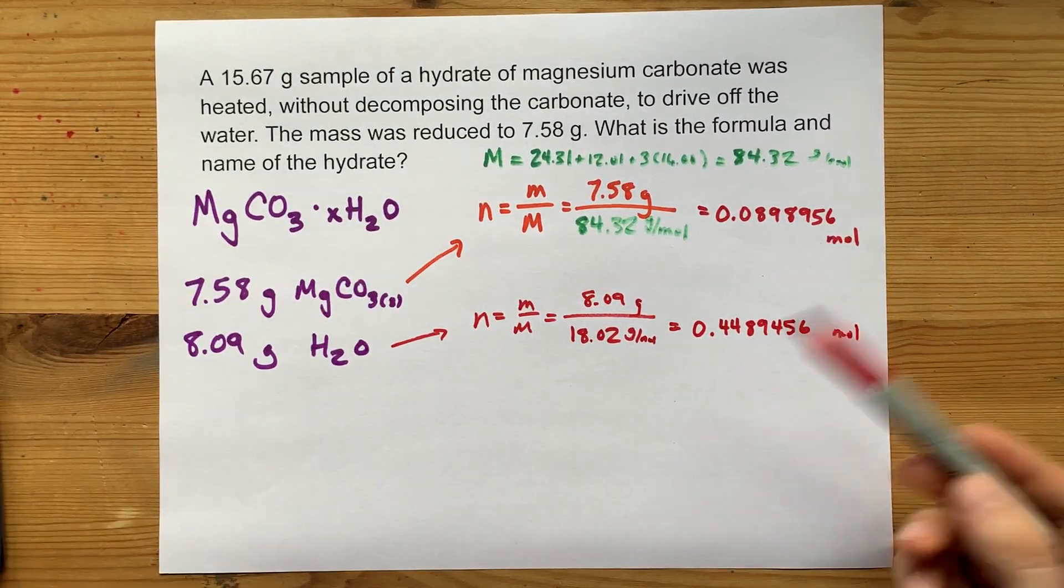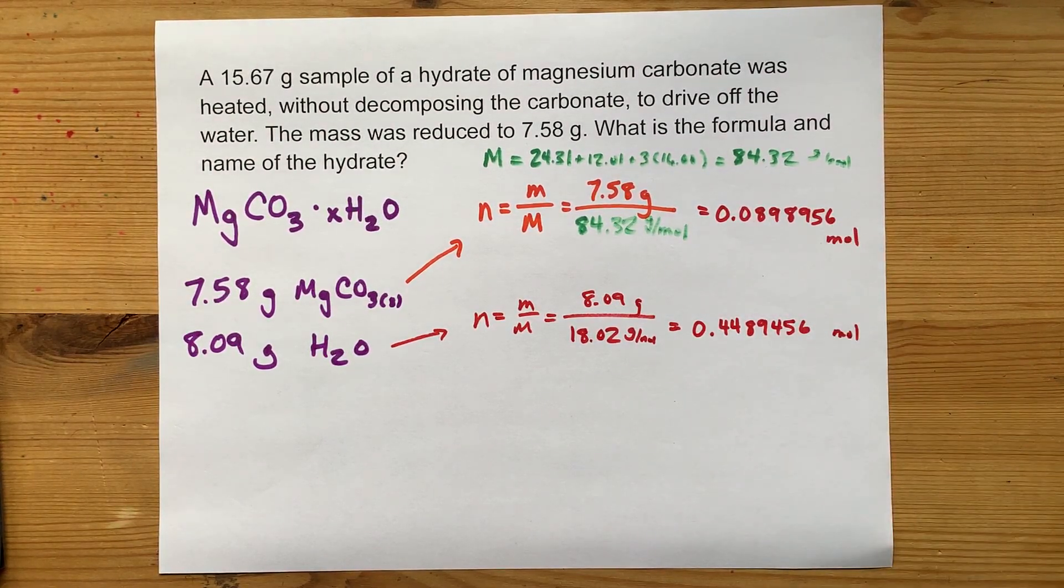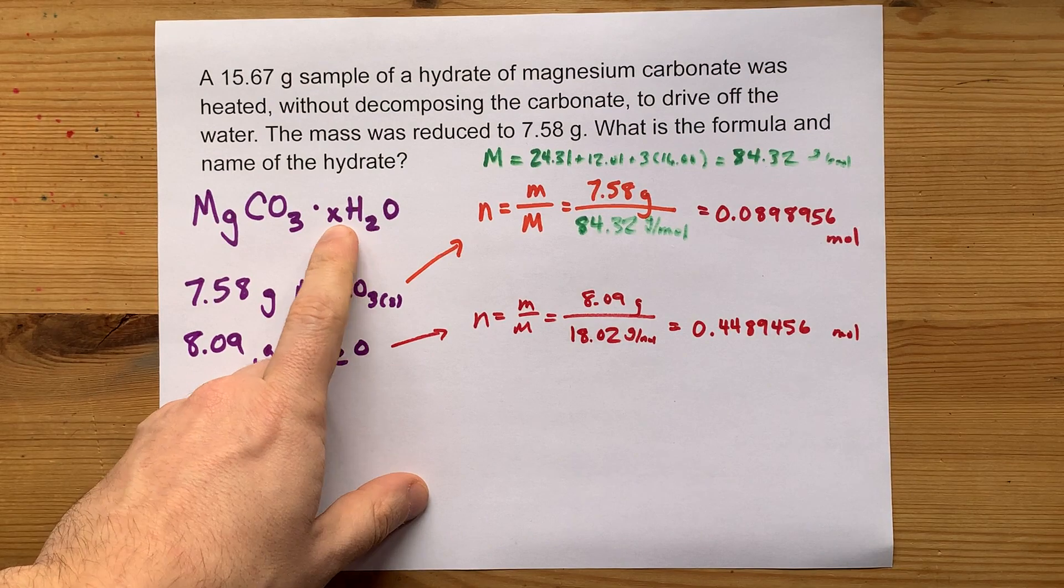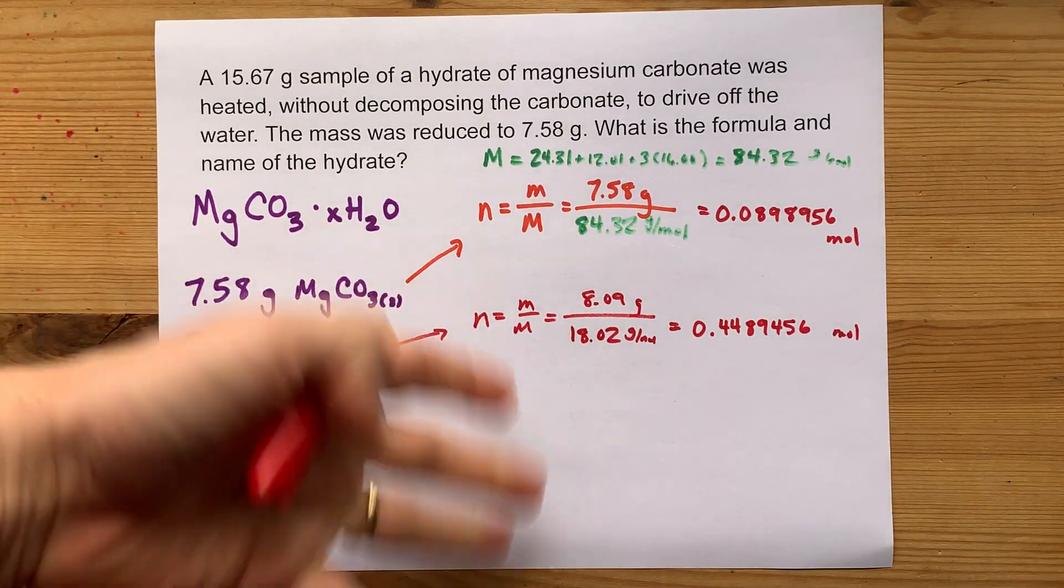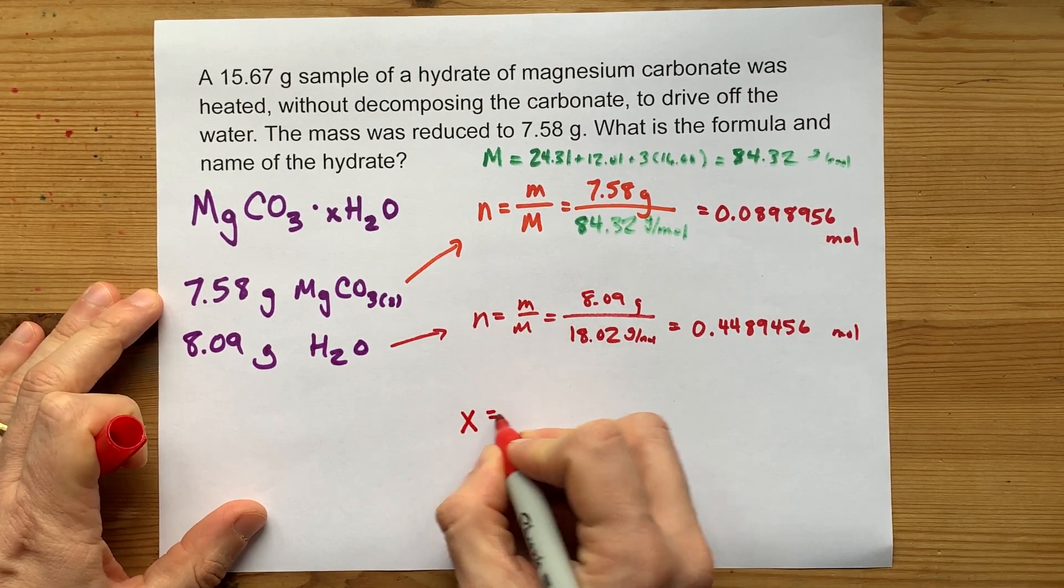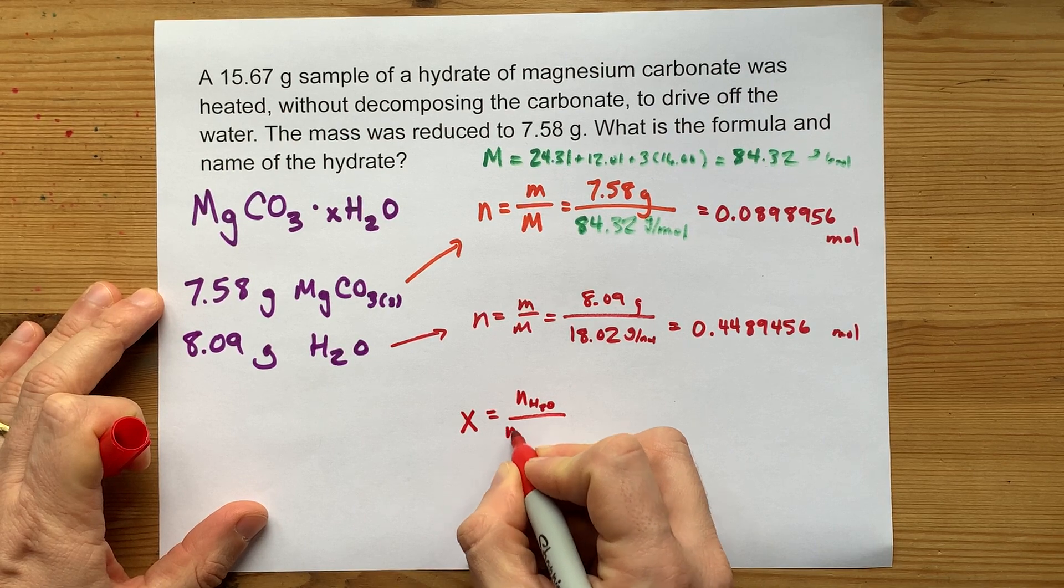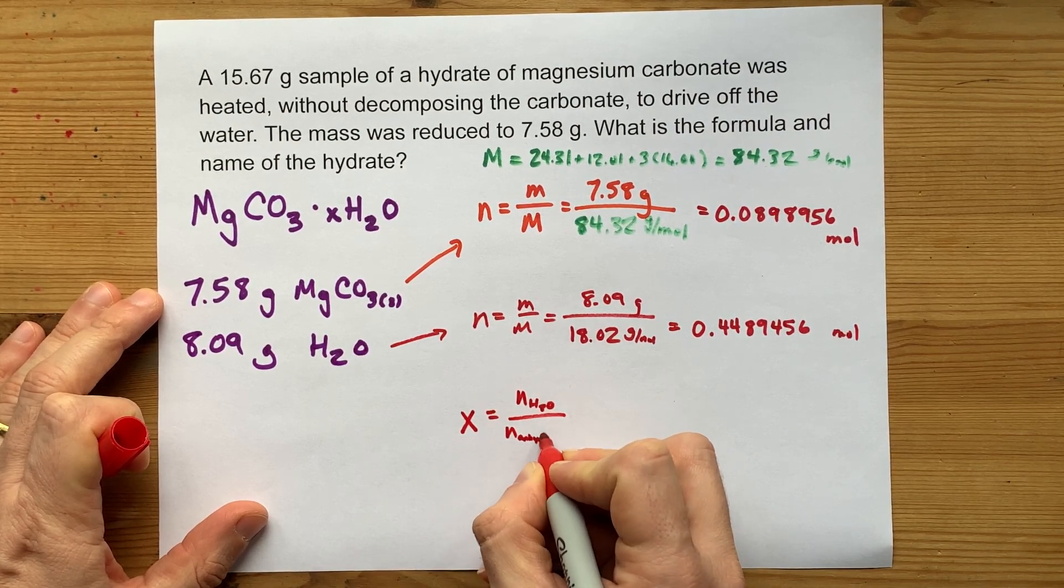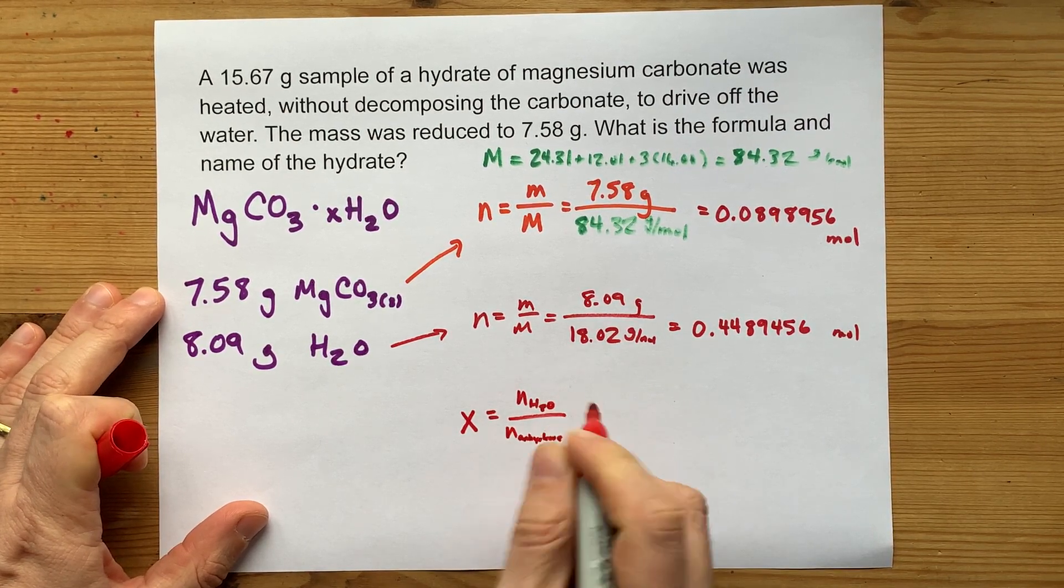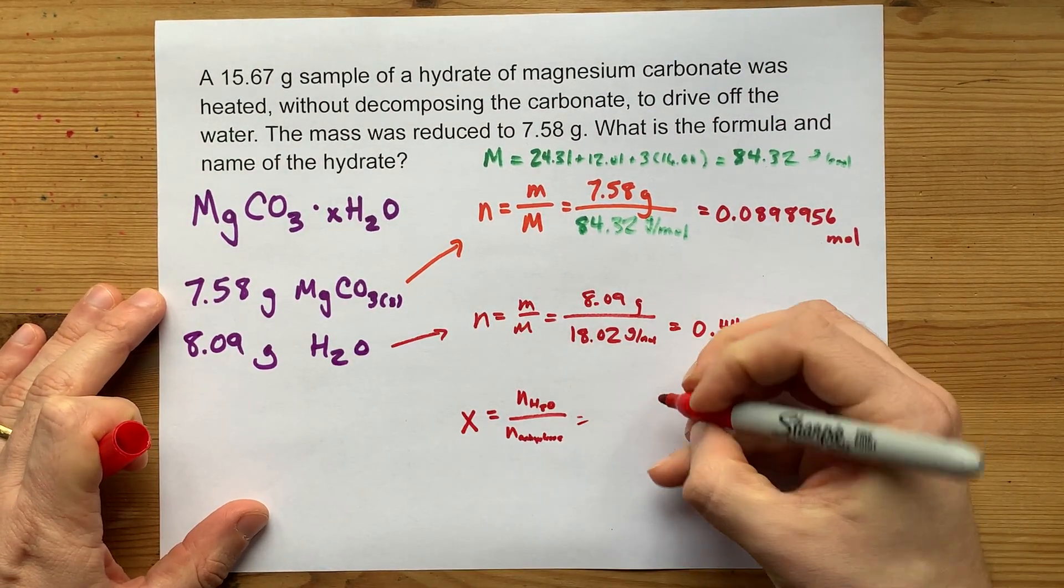And here's the idea. You have, in this case, more moles of water than you do of magnesium carbonate. Because this is probably a whole number, like 2, 3, 4, 5, could go all the way up to 12 as far as I know. The ratio x is the number of moles you found of water divided by the number of moles of the anhydrous, or the ionic compound without the water. Now I'm going to plug these numbers in.